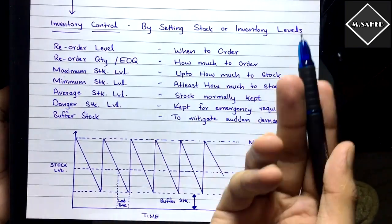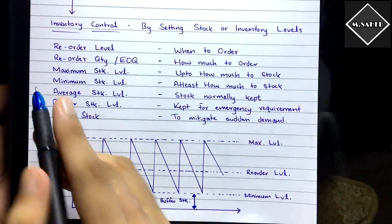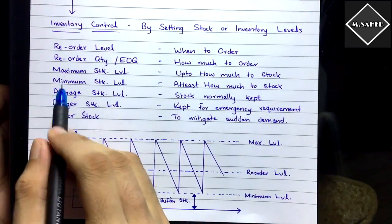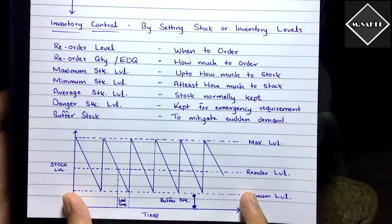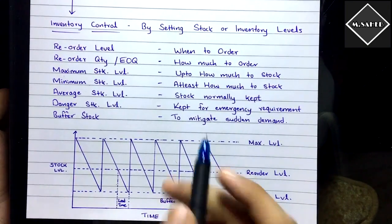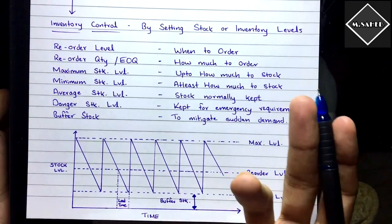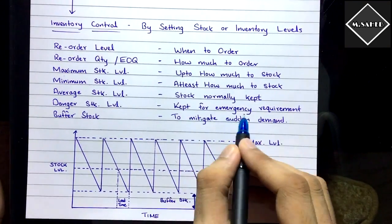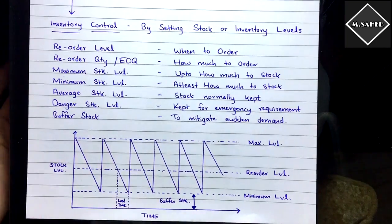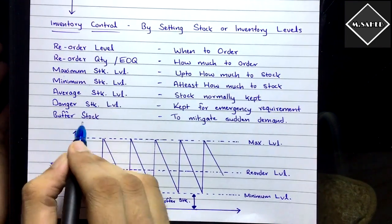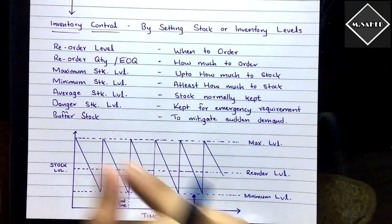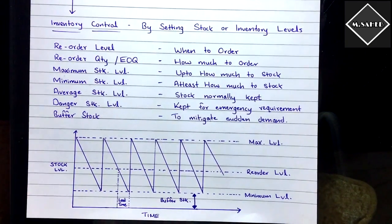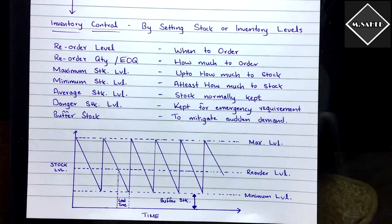We have: reorder level — when to order; reorder quantity — how much to order; maximum stock level — up to how much maximum to stock; minimum stock level — at least how much to stock; average stock level — stock normally kept; danger stock level — kept for emergency requirement, below the minimum level; and buffer stock — the minimum inventory maintained below the minimum level to mitigate sudden demand.